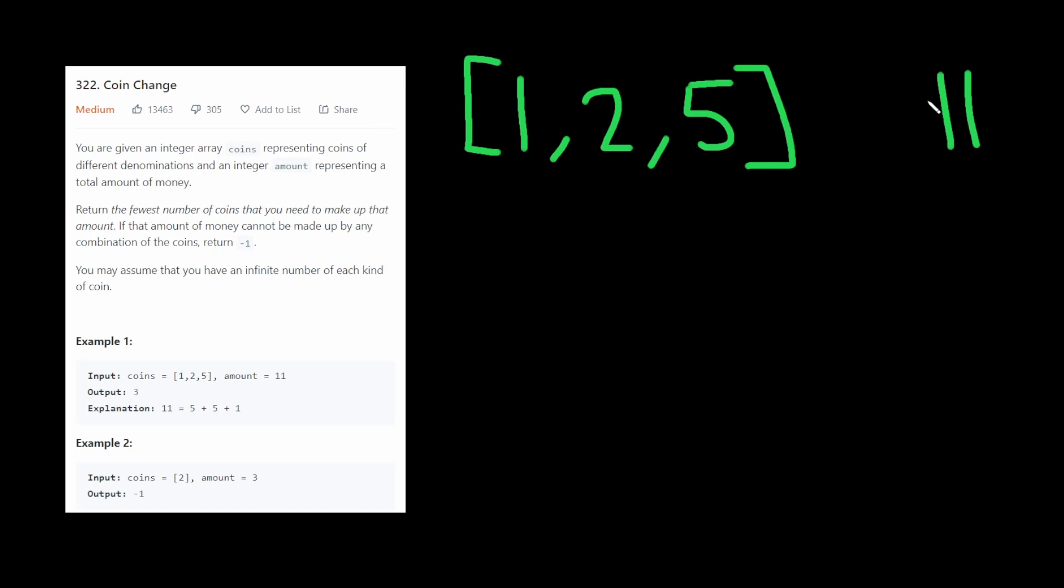Now, in this case here, greedy algorithm works, right? All we do is we get the maximum coin, we subtract it from the amount, it goes to 6, then we get the maximum coin, we subtract it from the amount again, so now it becomes 1.